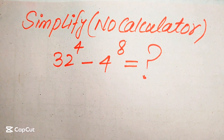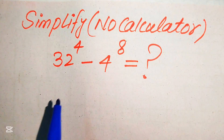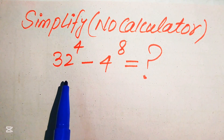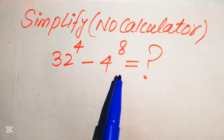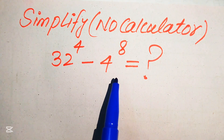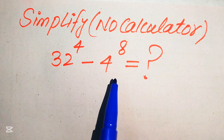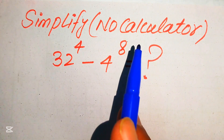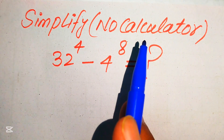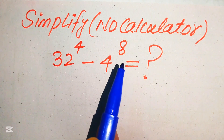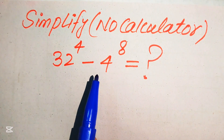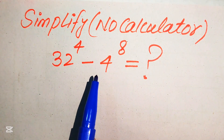Hello everyone. How to simplify this nice algebraic expression: 32 to the power of 4 minus 4 to the power of 8, written in simplified form. A calculator is not allowed in this problem, which means we need to do all of the working on paper.